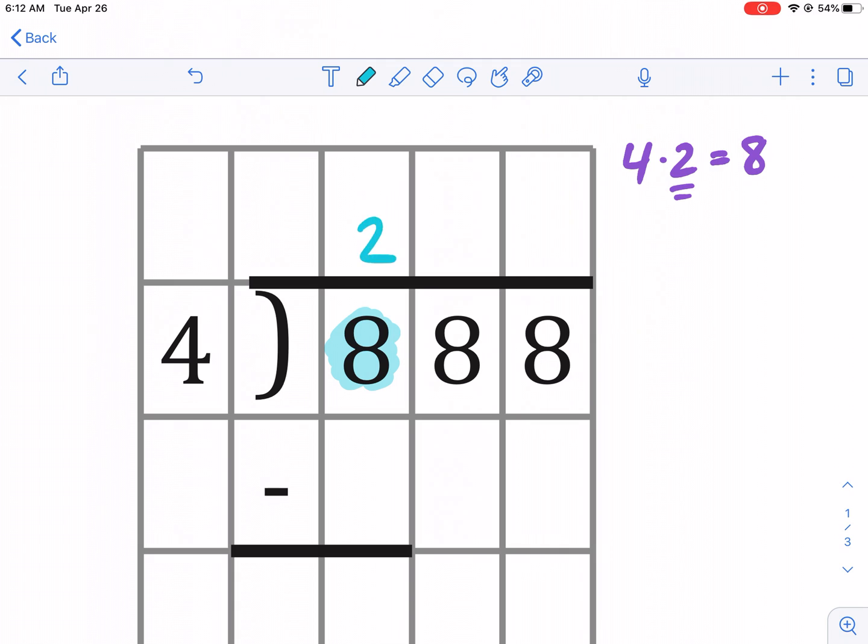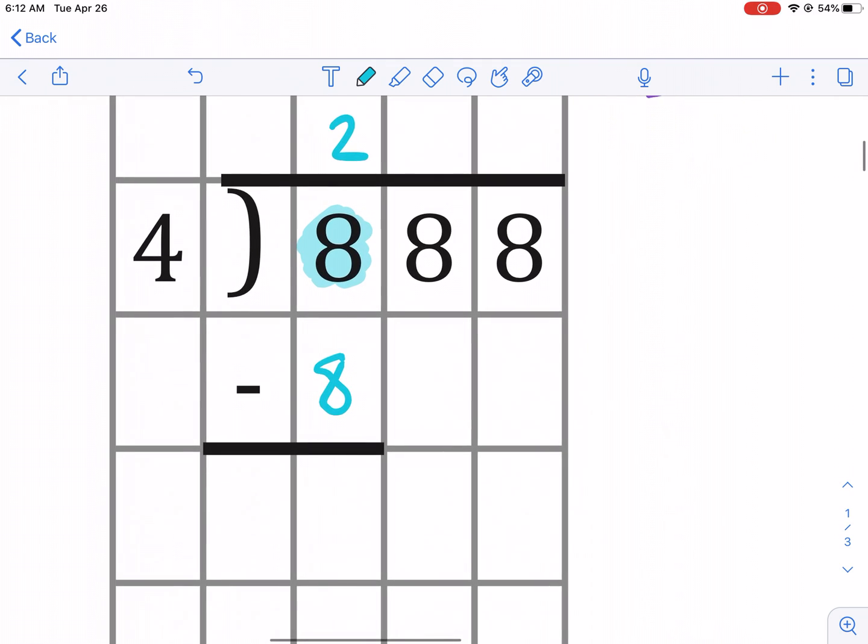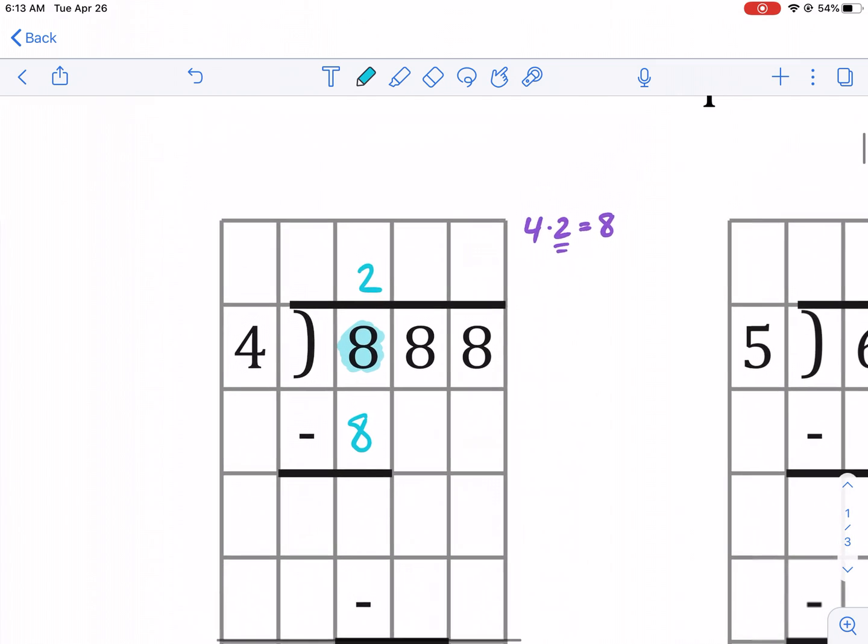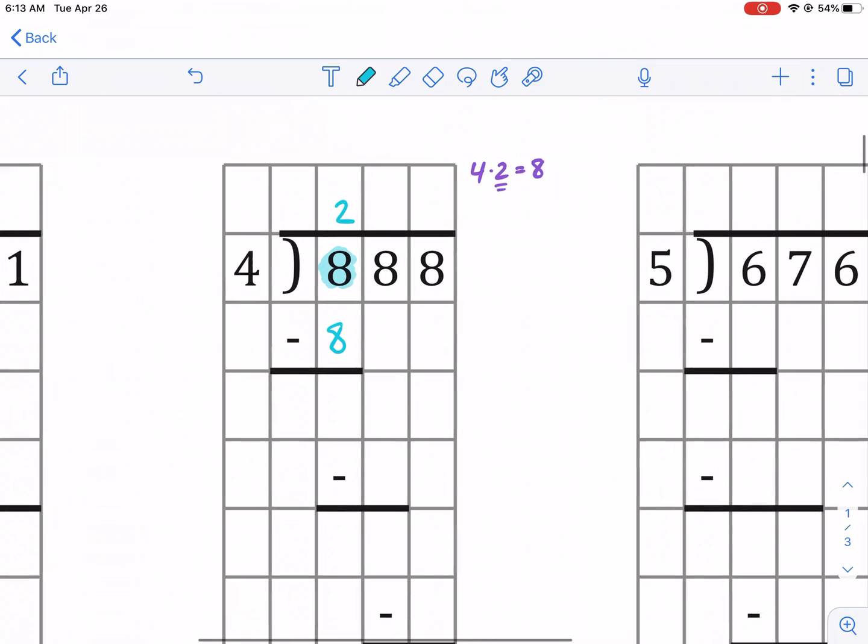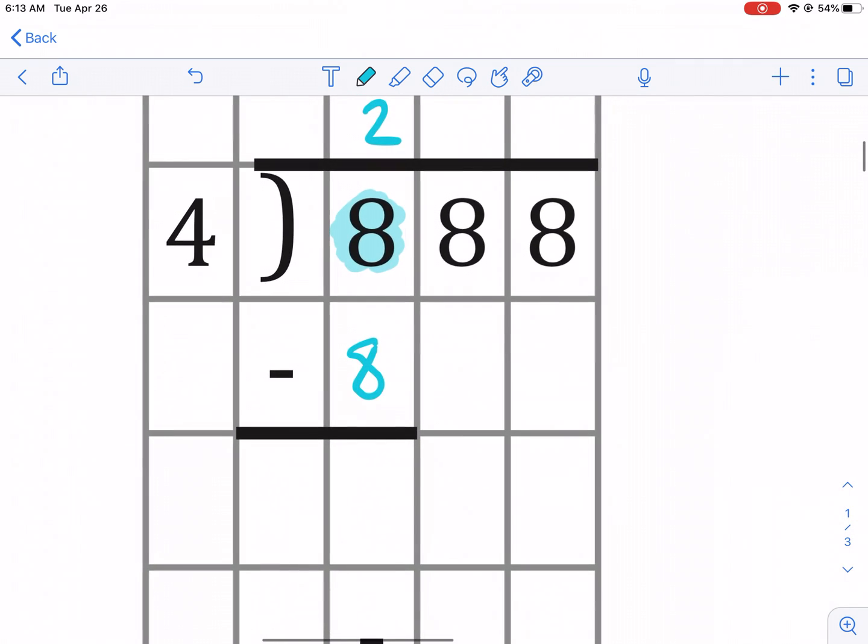Let me change this to a blue color just so we can stay on the same page here. So I'm going to put 2 here because 4 goes into this 8. 4 times 2 equals 8. So that fits into it. And we can go ahead and put that result. 4 times 2 equals 8. Now we're going to do is I like this template actually for math drills because it sets it up very nicely.